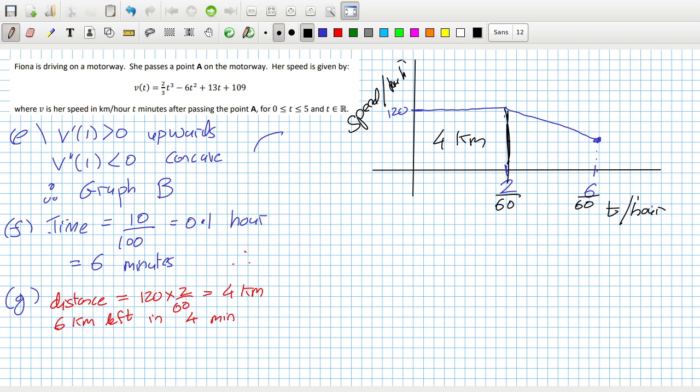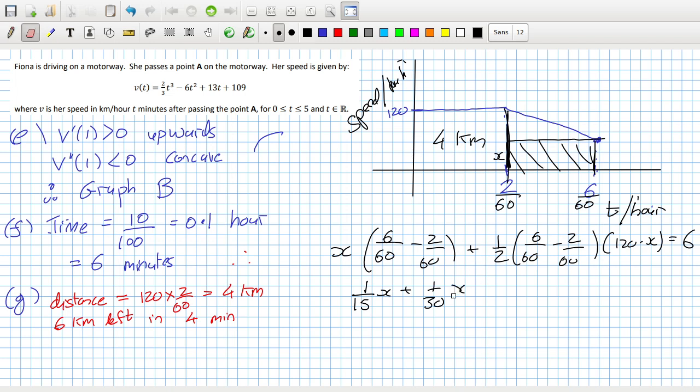We can do it as a bit of a maths problem here. We'll call the height here x. So x times (6/60 - 2/60), that's this area here, plus the triangle, which is a half the base (6/60 - 2/60) times the height, which is 120 - x. That should equal 6. Of course, it's 4/60, which is 1/15. So that's 1/15 x plus 1/30 times (120 - x). That's equal to 6. So that's 1/15 x plus 8 minus 1/30 x equals 6.